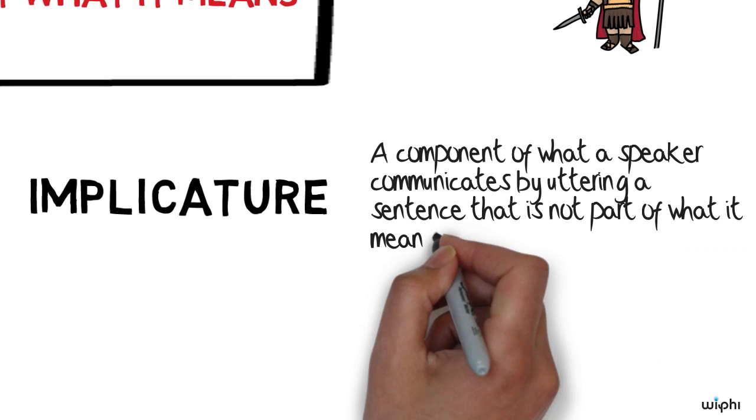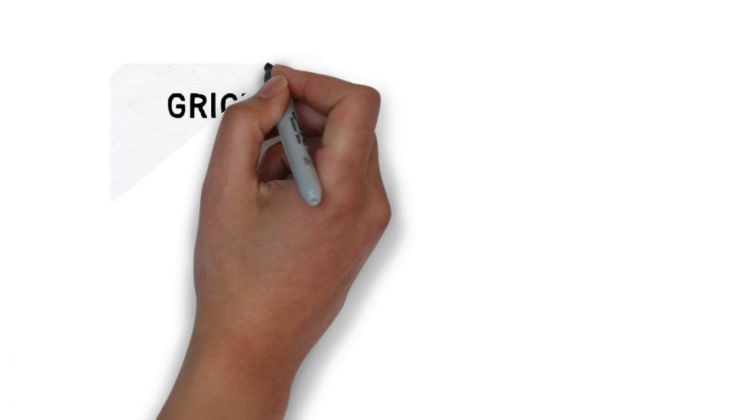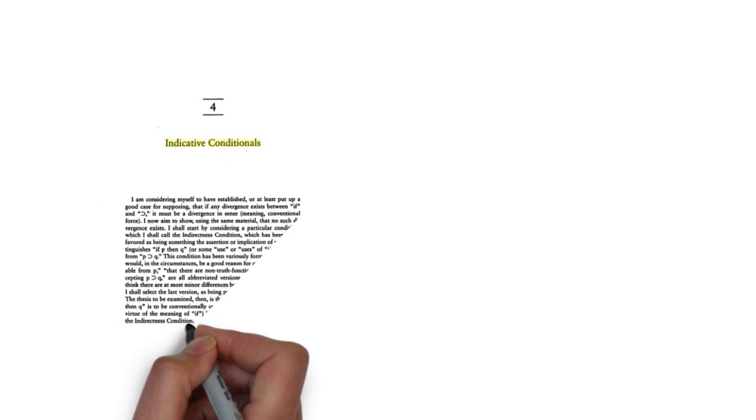This is usually understood as an implicature, a component of what a speaker communicates by uttering a sentence that is not part of what it means. If you're interested in that way of defending the material conditional theory, I recommend that you check out the Wi-Fi lectures on implicatures and the following papers by Paul Grice and Frank Jackson.